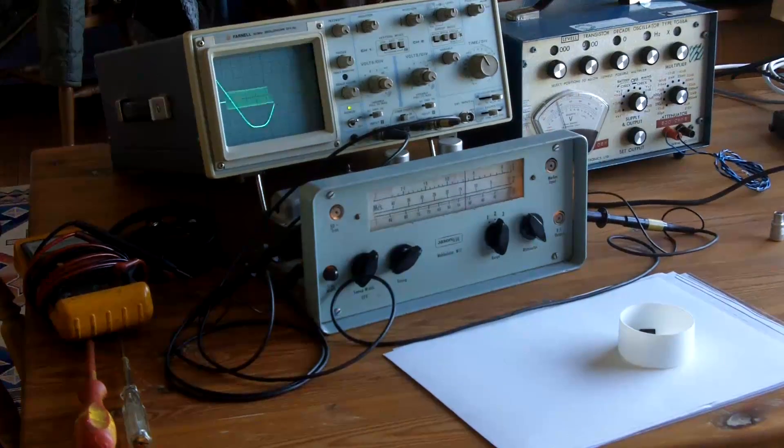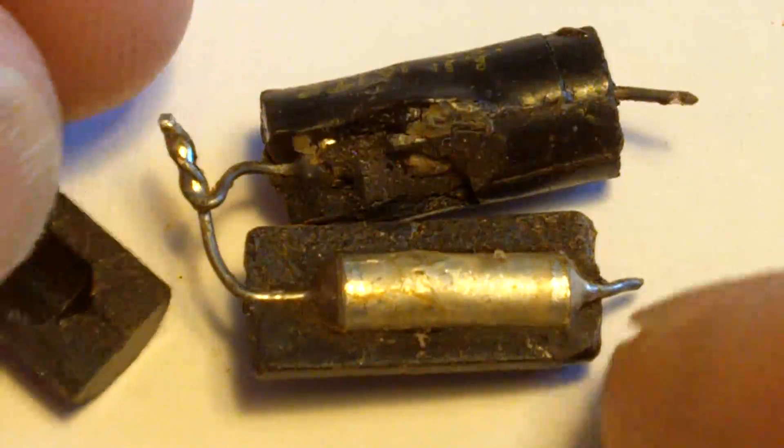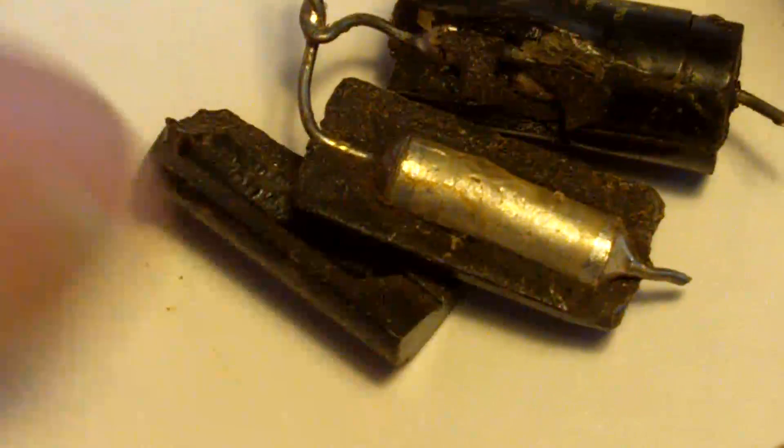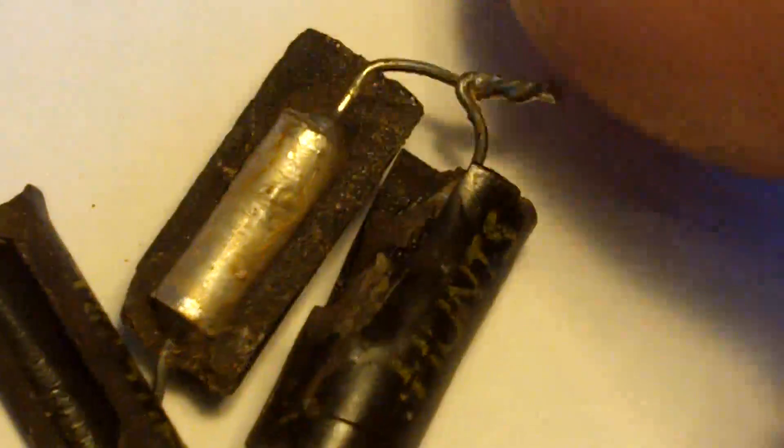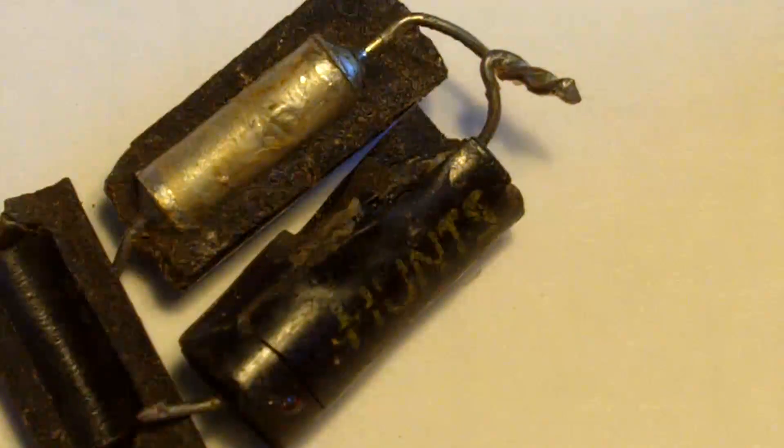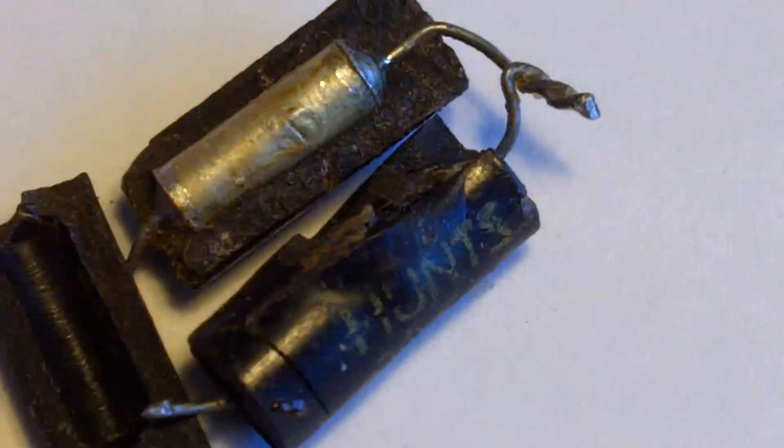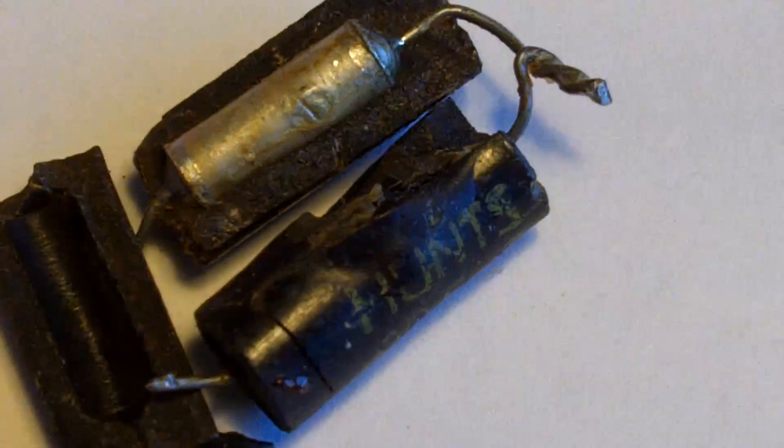I'll just show you those. These are 2.005 capacitors that had been fitted, not shown on the circuit diagram, but they had been fitted across the output of the mains transformer. That mains transformer has 200, 0, 200 volts, so 400 volts across it.